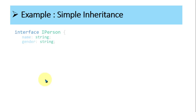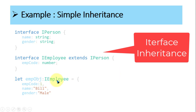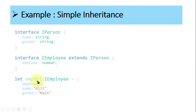For simple inheritance, look at interface IPerson with a name of type string and gender of type string. Then interface IEmployee extends IPerson, adding employeeCode of type number. So IEmployee has: employeeCode, plus name and gender inherited from the super type. To create an object: employeeObject of type IEmployee is assigned employeeCode = 1, name = 'Bill', gender = 'Male'. Then console.log prints employeeObject.employeeCode, employeeObject.name, and employeeObject.gender. The object is of type IEmployee, which inherits from IPerson, so name and gender are accessible.